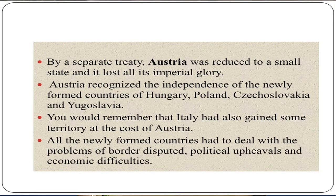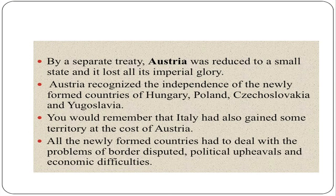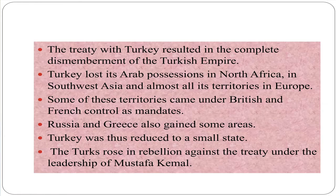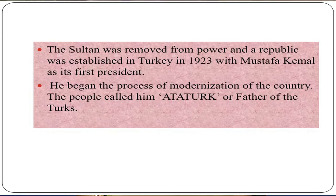By a separate treaty, Austria was reduced to a small state. Italy had also gained some territory at the cost of Austria. All the newly formed countries had to deal with the problems of border disputes, political upheavals and economic difficulties. The treaty with Turkey resulted in the complete dismemberment of the Turkish Empire. Turkey lost its Arab positions in North Africa, in Southwest Asia, and almost all its territories in Europe. Some of these territories came under British and French control as mandates, while Russia and Greece also gained some areas. Turkey was reduced to a small state, but the Turks rose in rebellion against the treaty under the leadership of Mustafa Kemal. The Sultan was removed from power and a republic was established in Turkey in 1923, with Mustafa Kemal as its first president. He began the process of modernization, and the people called him Ataturk, or father of the Turks.